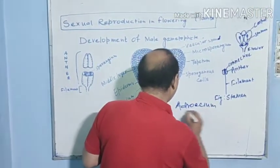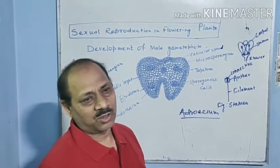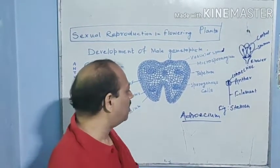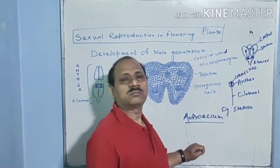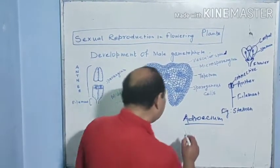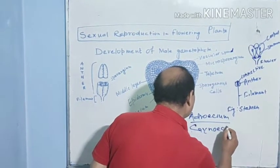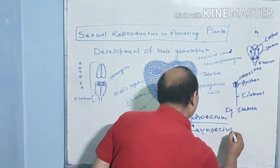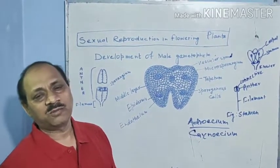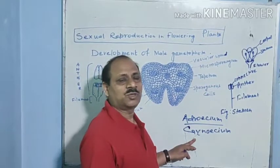Androecium is known as the male reproductive organ, and its unit is known as stamen. Gynoecium is known as the female reproductive organ, and its unit is known as carpel.